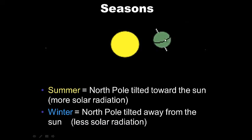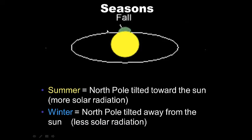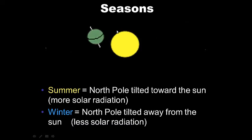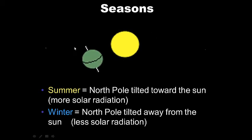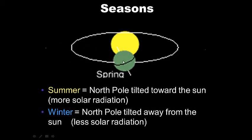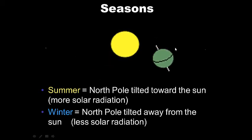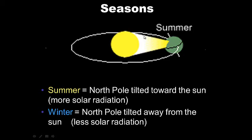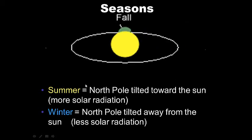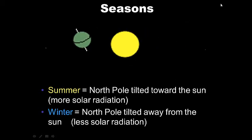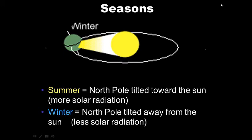In the summer, we're tilted towards the sun. In the winter, our north pole is tilted away from the sun. In the summer, once again, the north pole is tilted towards the sun. That's what our seasons are the result of.